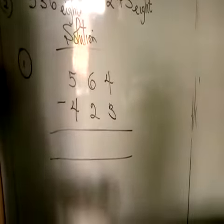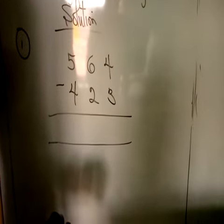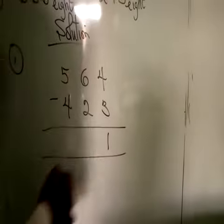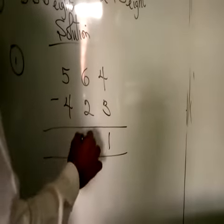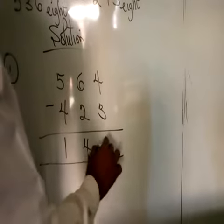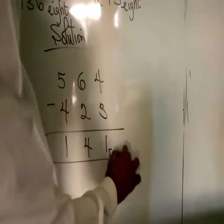4 plus 3... Did I just say plus? Okay, 4 minus 3 will give me what? 1. 6 minus 2 will give me 4. 5 minus 4 will give me 1. So this is your final answer, base 7.